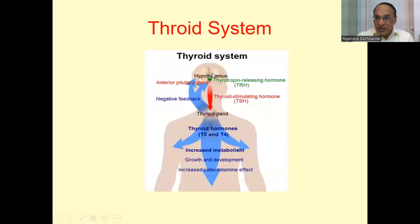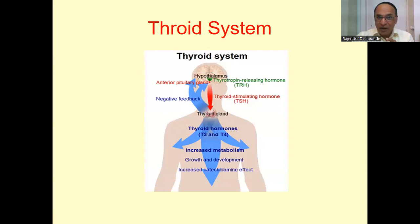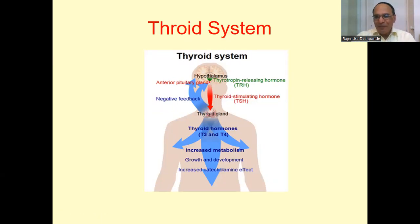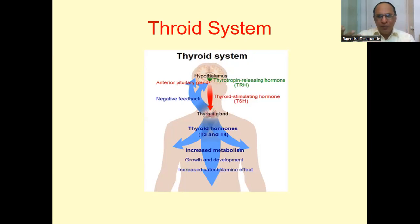The thyroid system is controlled by the brain. There is a part called the hypothalamus, which releases a hormone called Thyrotropin Releasing Hormone, or TRH. This gives a signal to the anterior pituitary gland — called the master gland in endocrinology — which is related to hormones and endocrine glands.